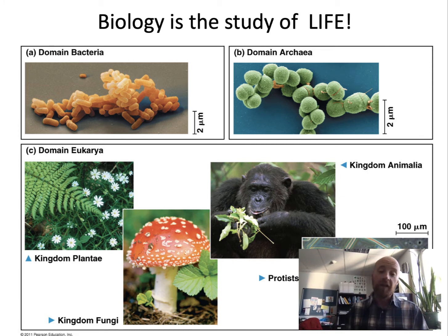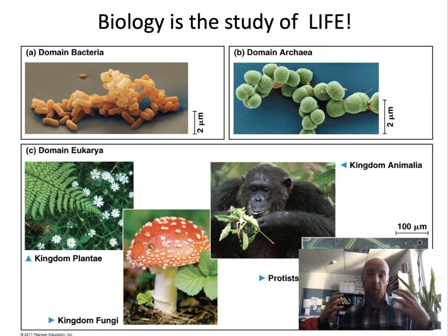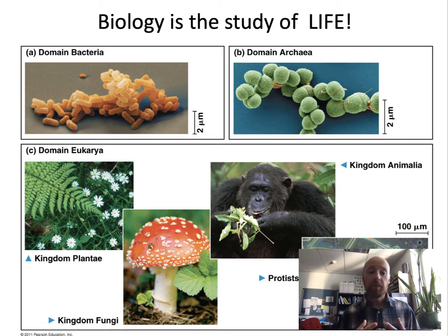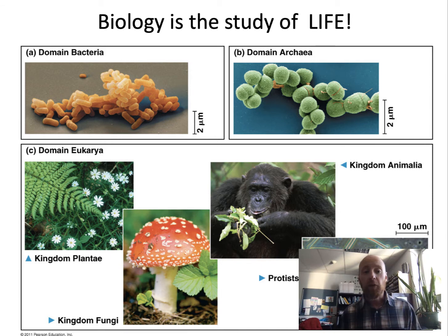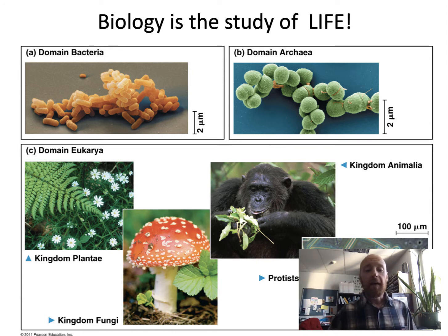Living organisms are broken up into several categories. The largest grouping is called a domain, and we have three major domains of life. Two domains are single-celled: the bacteria and the archaea — you can see those at the top. Those are structurally a lot more simple than the third domain, the eukaryotes, meaning having a nucleus.